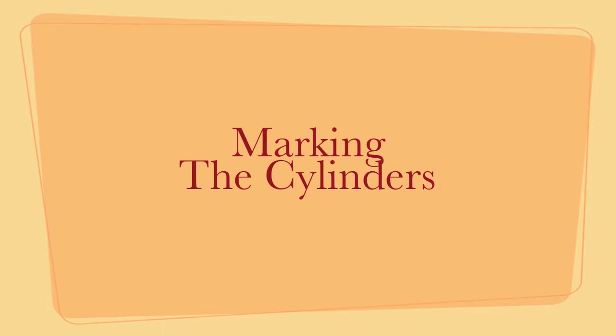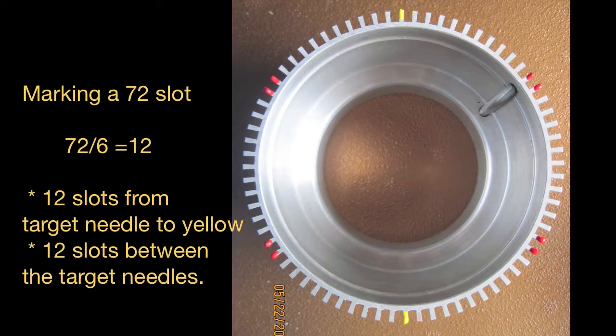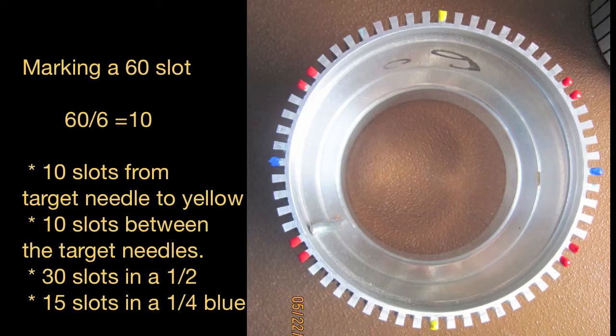To mark your cylinders, use these photos of the 72, 60, and 48 slot cylinders to understand where the marks are placed. To mark other size cylinders, divide the slots by 6, then use that number in place of those noted in the pictures.